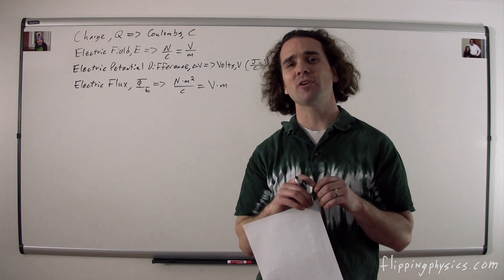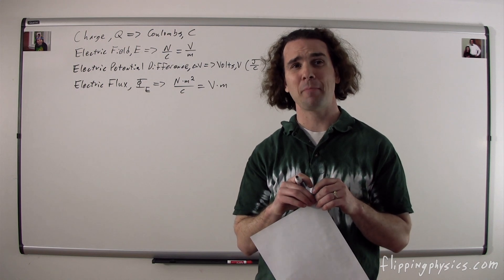Bobby, what are the symbol and dimensions for capacitance? The symbol for capacitance is an uppercase C, and its dimensions are farads — a farad is a coulomb per volt. We shouldn't confuse the symbol for capacitance, uppercase C, with the dimensions for charge, coulombs, which is also, unfortunately, an uppercase C.